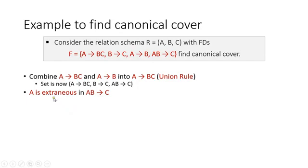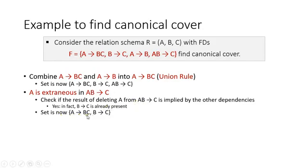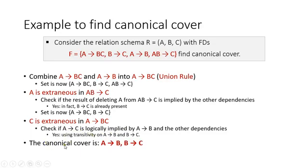Next, A is an extraneous attribute in AB determines C. We check: if we delete A from AB determines C, is the result implied by the other dependencies? Yes — B determines C is already present. So A is extraneous, and removing it gives the new set: A determines BC and B determines C. Next, C is an extraneous attribute in A determines BC. We check if A determines C is logically implied by A determines B and the other dependencies. Yes — by transitivity, A determines B and B determines C implies A determines C. So we remove C from A determines BC.